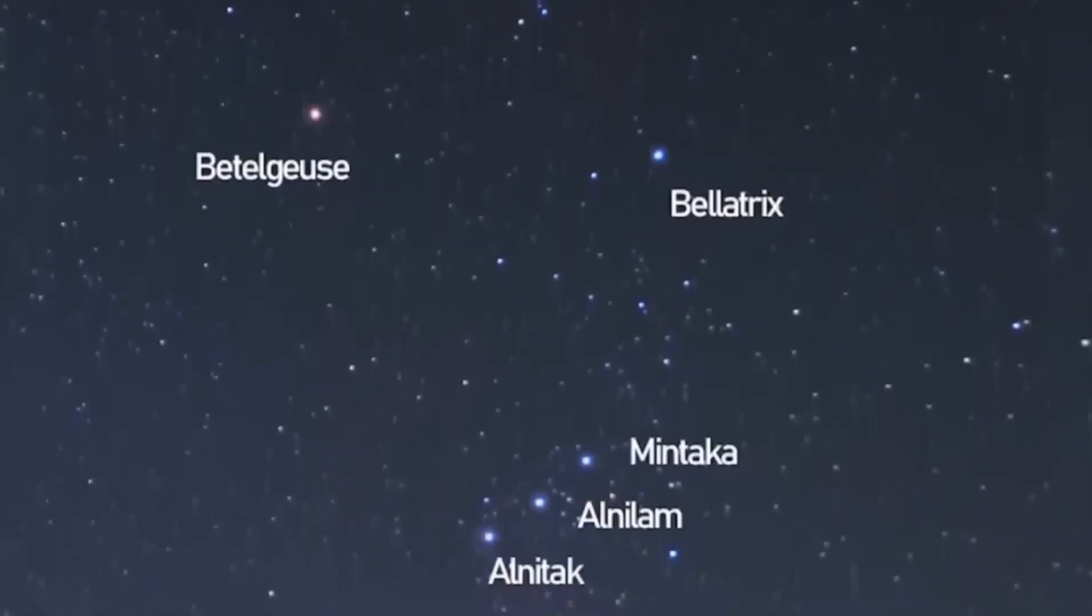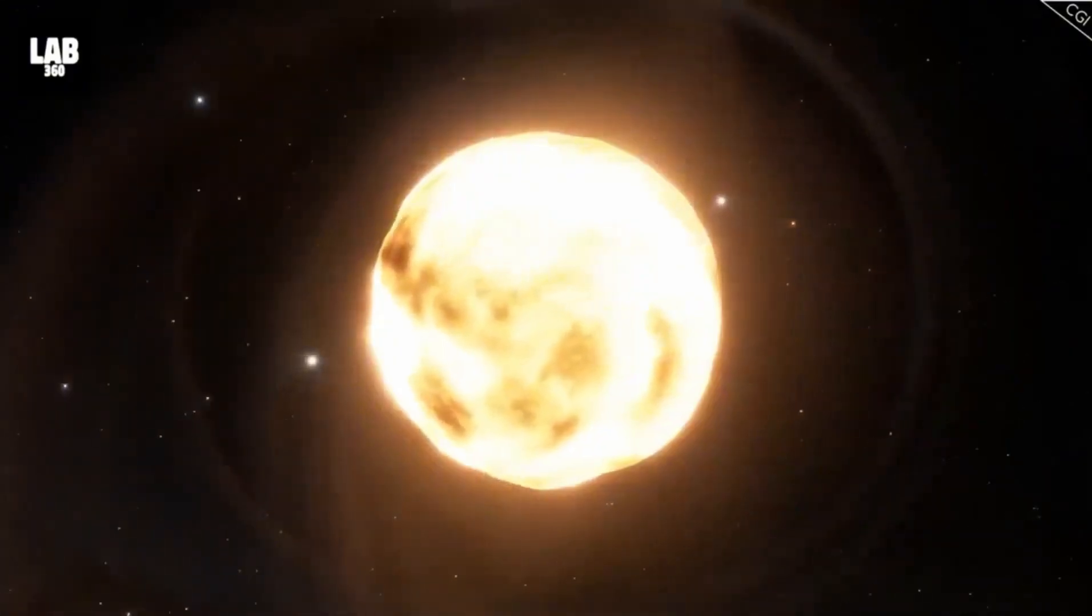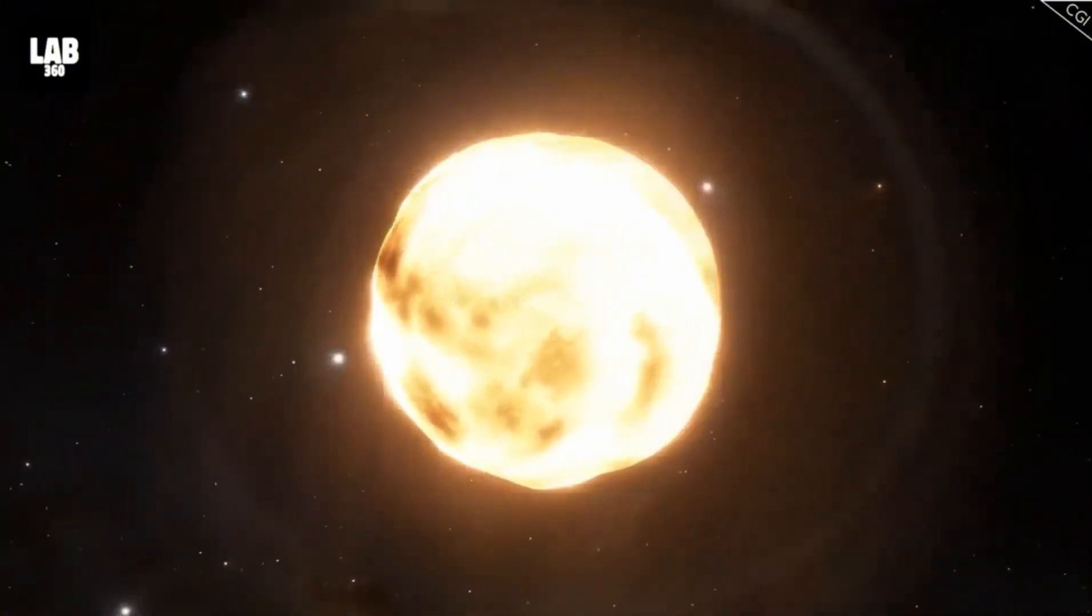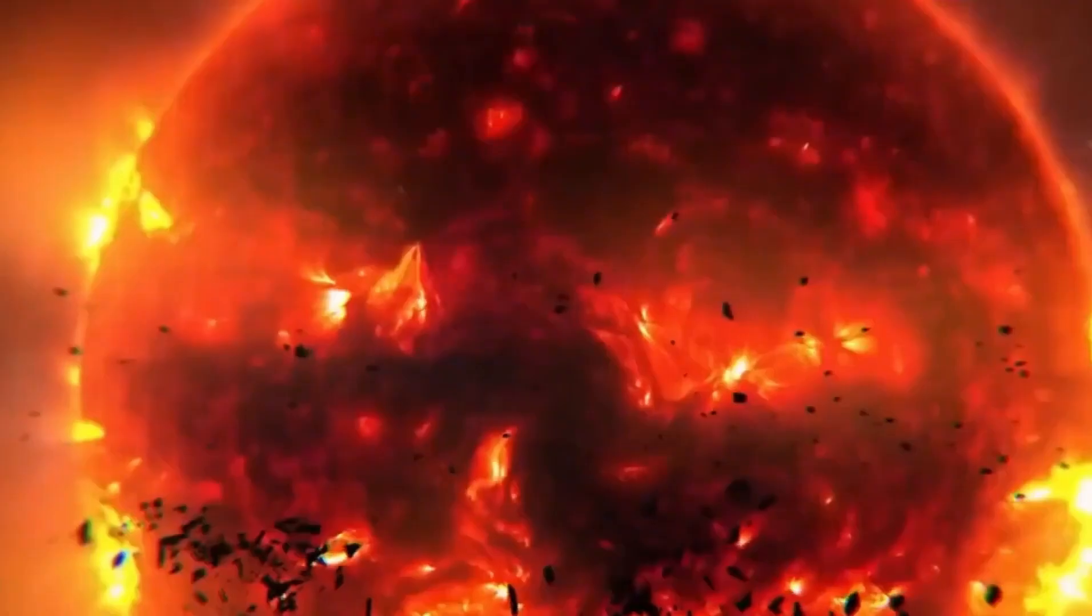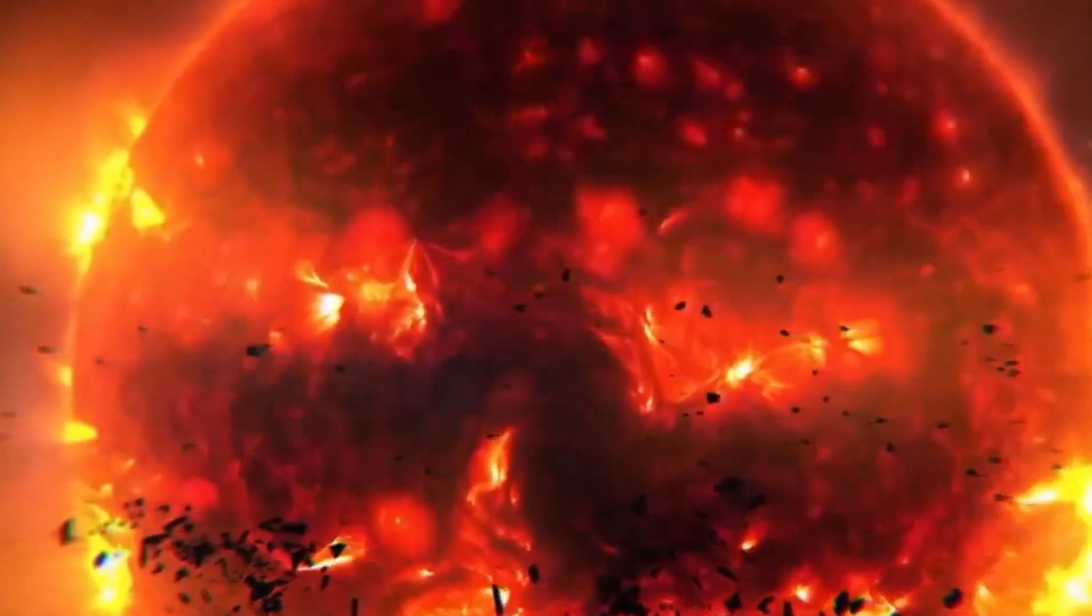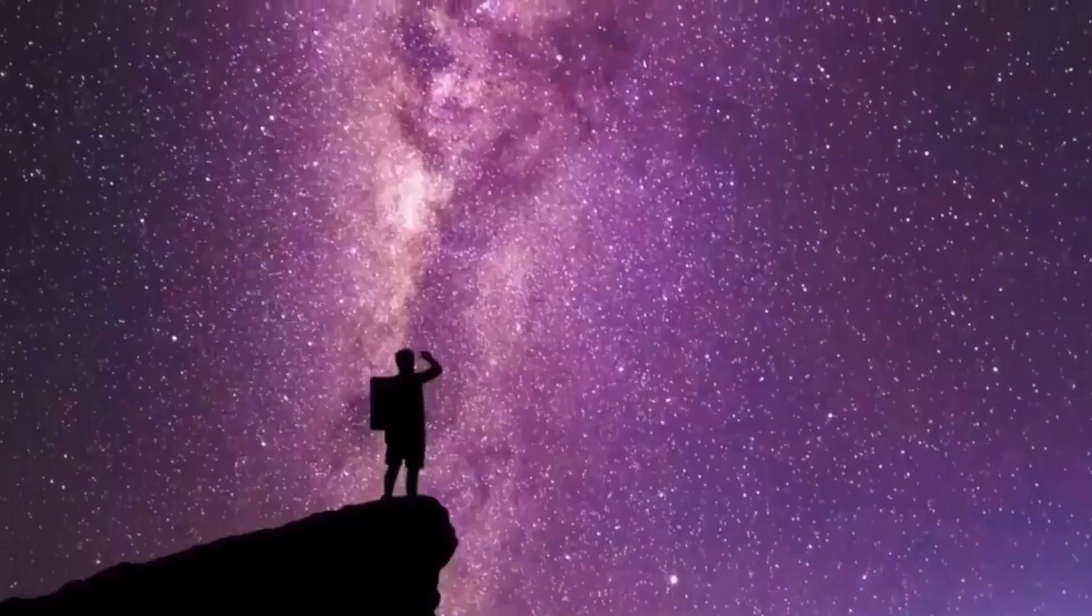At 10 million years old, it's a lot younger than our 5 billion-year-old sun. But Betelgeuse's massive size means it consumes its materials at a much faster pace, predicting a shorter lifespan than that of other stars.